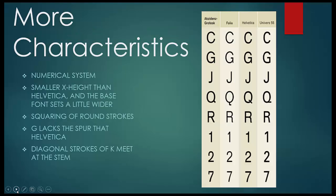Looking at more characteristics comparing Universe to Helvetica: Universe has a smaller x-height than Helvetica and the base fonts are set a little wider. It has a squaring of the round strokes, whereas Helvetica and Akzidenz are more round. Universe's G also lacks the spur.